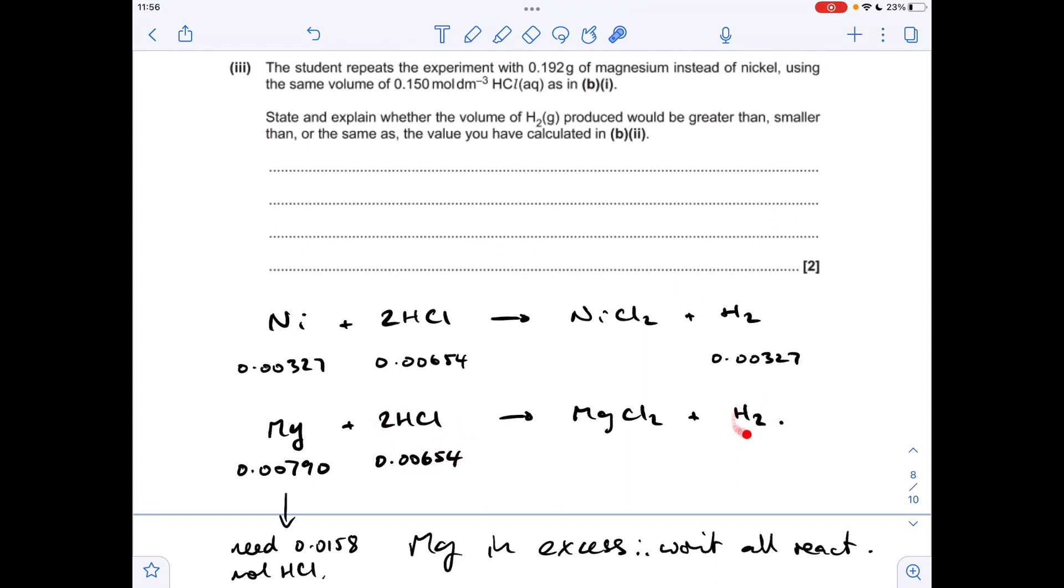Which is obviously going to influence the volume of hydrogen. So look at the ratio 2 to 1. So we're going to get half as many moles of H2, which is the same as before, 0.00327. So the volume of hydrogen will be exactly the same.